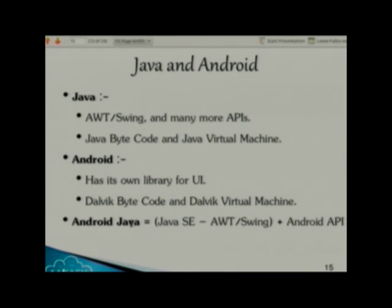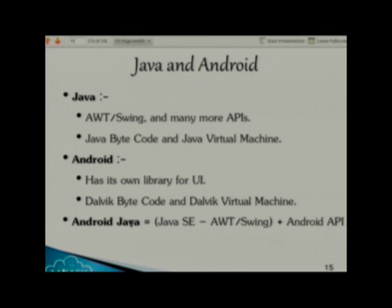What the Android people did is they removed AWT and Swing from Java Standard Edition, because we are talking about touchscreen devices. Then they added their own Android API, and this combination forms what is called Android Java.